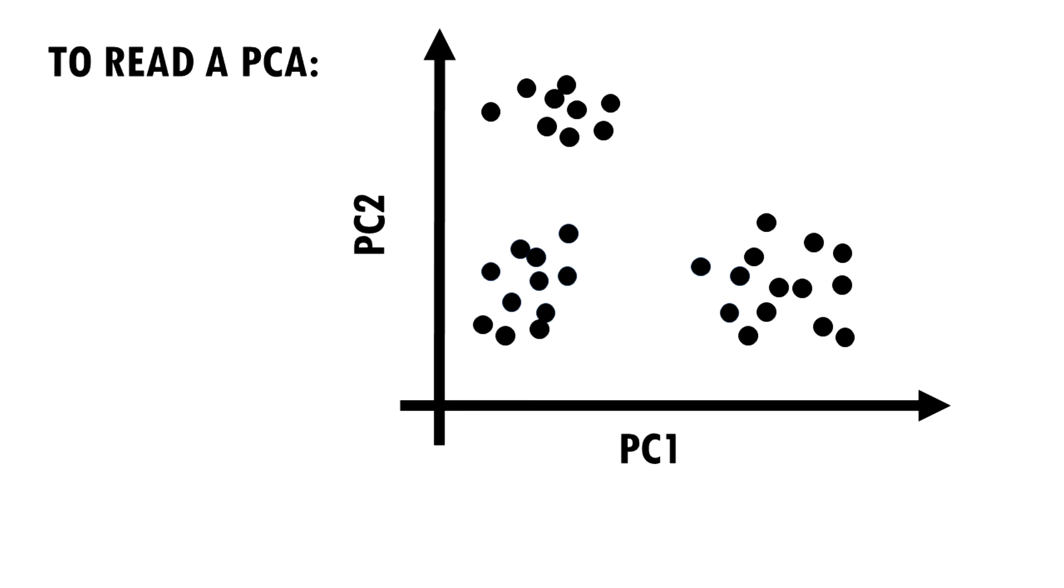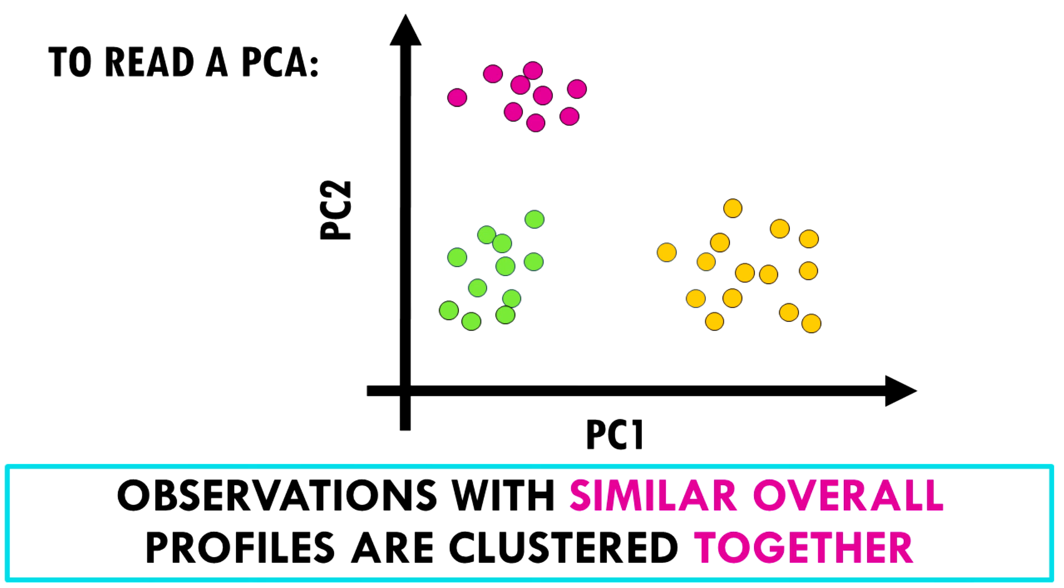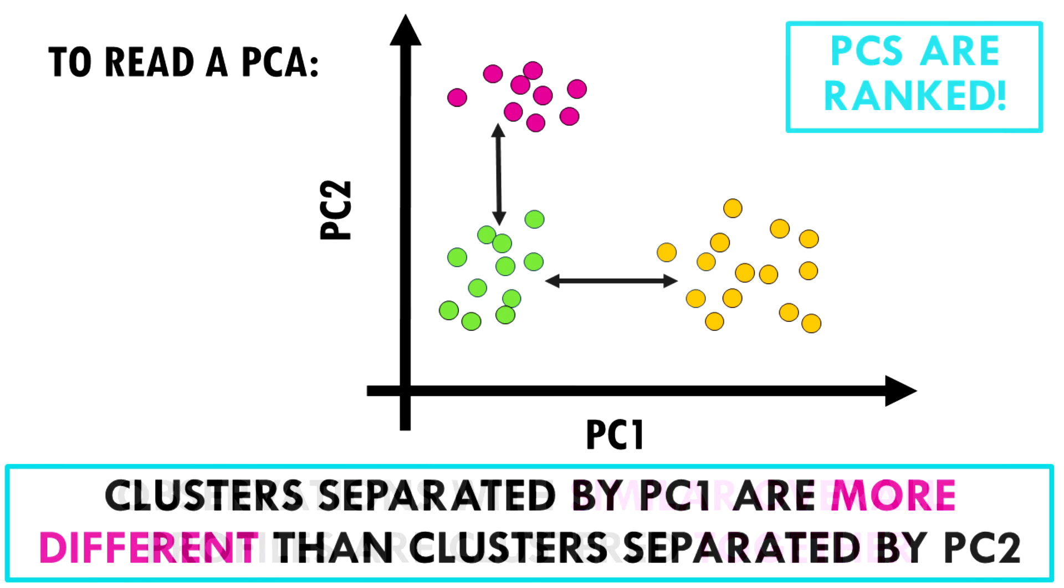How do we read a PCA? Observations with similar overall profiles are clustered together. PC1 captures the most information from our dataset, followed by PC2 and then PC3 and so on. This means that clusters separated along the x-axis are more different than clusters separated along the y-axis by a similar distance.